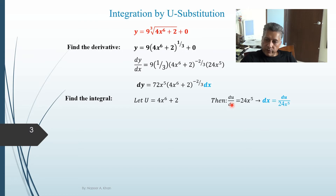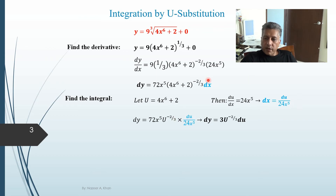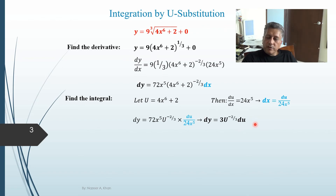I'm going to solve for dx. When I solve for dx I interchange the values: dx equals du divided by 24x to the fifth. We are now going to substitute u in place of the binomial and dx in place of that expression. Substituting: 72x to the fifth times u to the minus two thirds, multiplied by dx which is du over 24x to the fifth — the 24x to the fifth cancels out, 72 divided by 24 gives 3. So it becomes 3u to the minus two thirds du, and now we can apply integral notation.